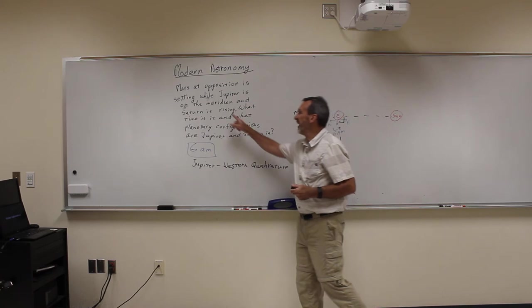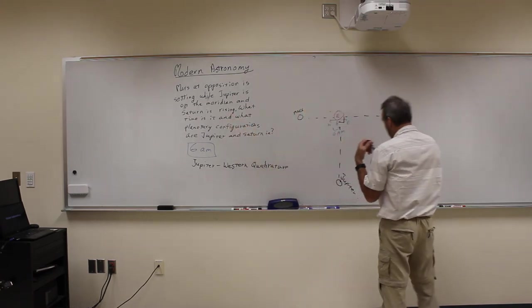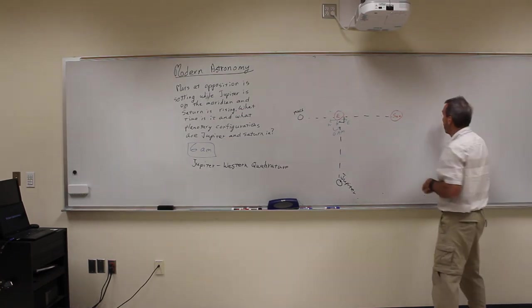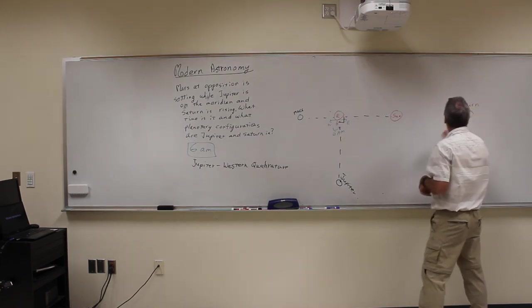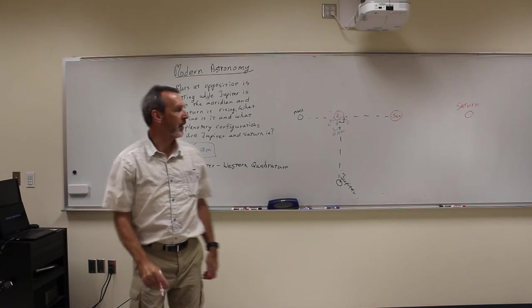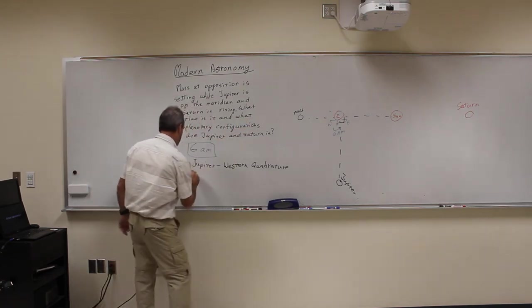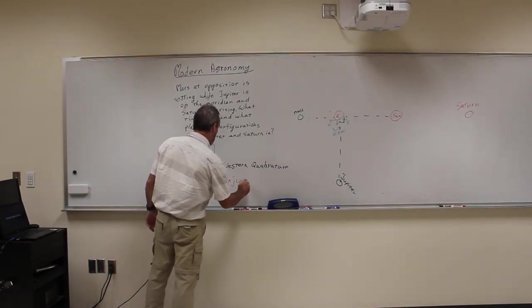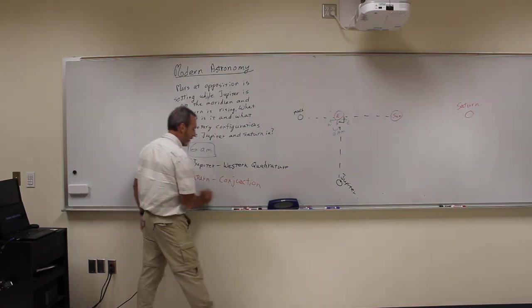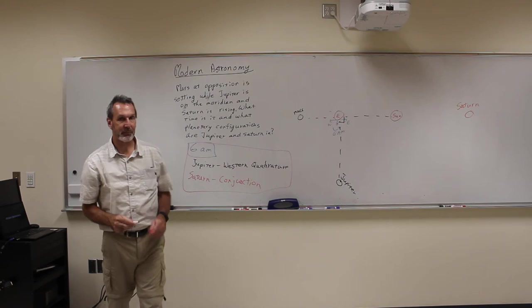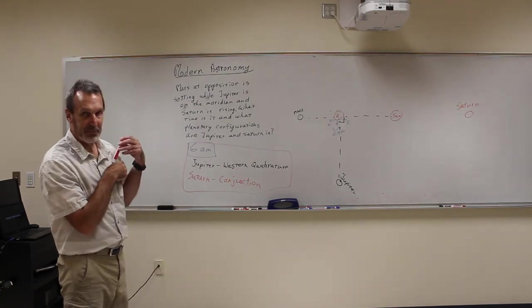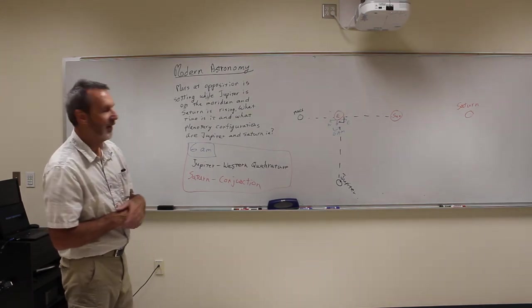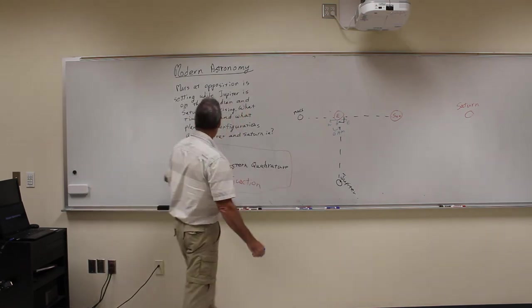Then it says Saturn is rising, so Saturn has to be in the east, east points this way, so Saturn's got to be over here. Remember, it's way further out here. But Saturn's way over here in the direction towards the sun, which means Saturn is in conjunction, because it's in the same exact direction as the sun is. There we go. That would be the answer to that problem. It's 6 a.m., Jupiter is in western quadrature, and Saturn is in conjunction. I'm going to do one more as an example. Okay?